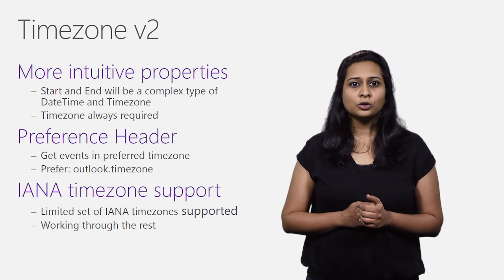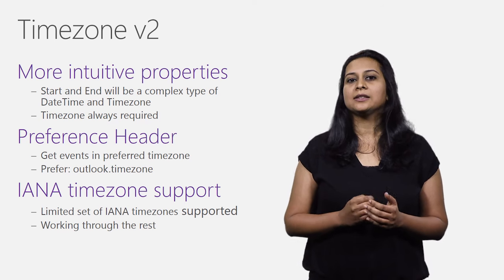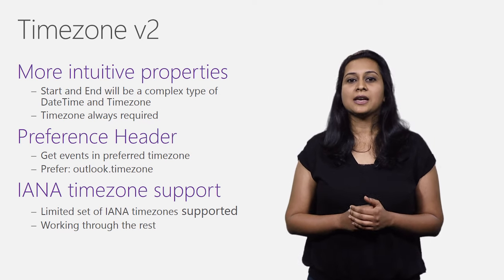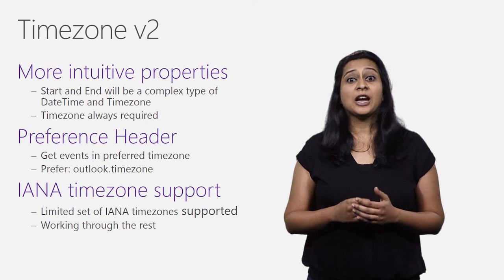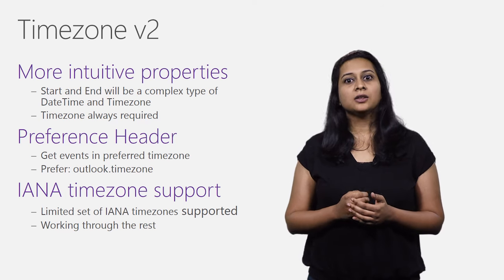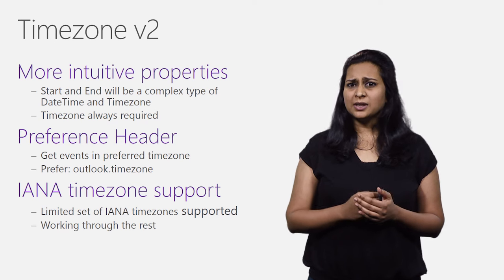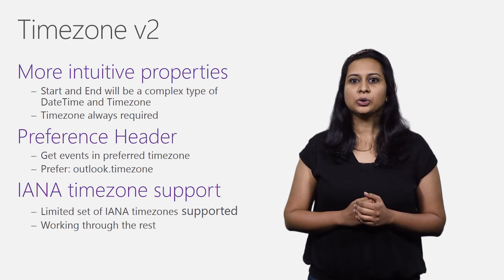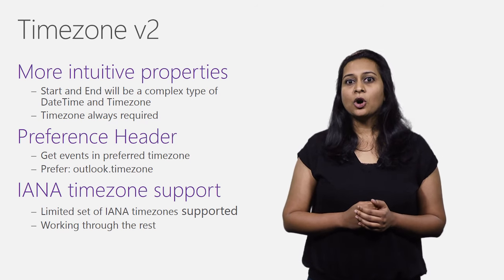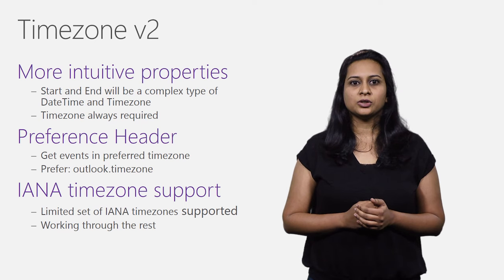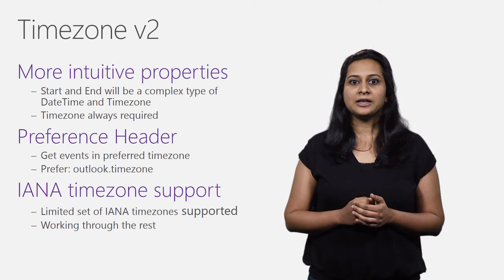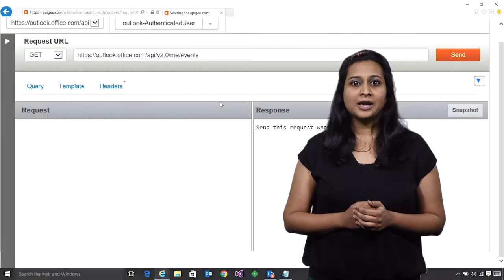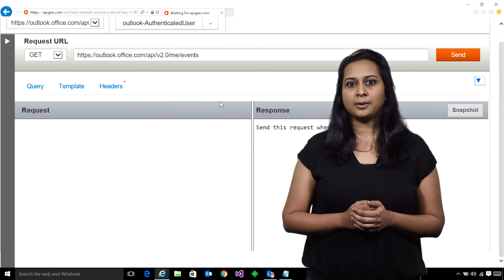We have also introduced support for apps to request events in the time zone of choice. If your app knows the user's time zone, specify it as a header in the GET request, and we will return the calendar start and end in the requested time zone. This is an optional header; if not specified in GET calls, events will be returned in UTC time. At this time, only a subset of IANA time zones — otherwise known as Olsen time zones — are supported by the API. We are working to add support for the rest in the near future.